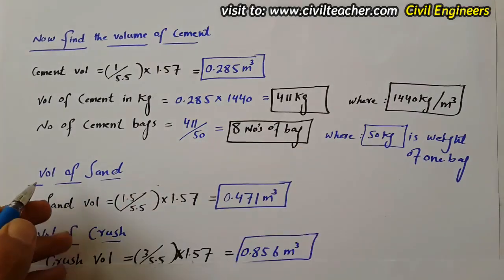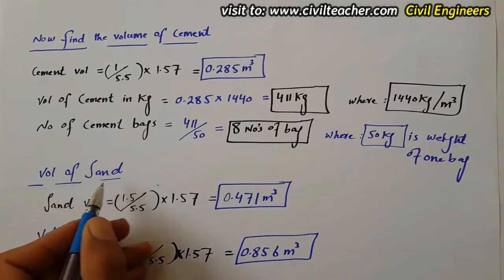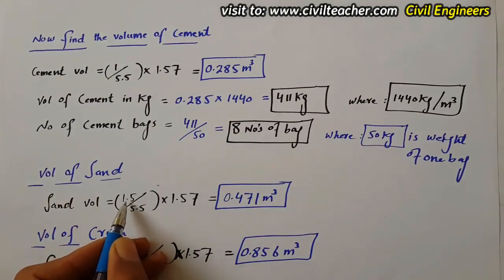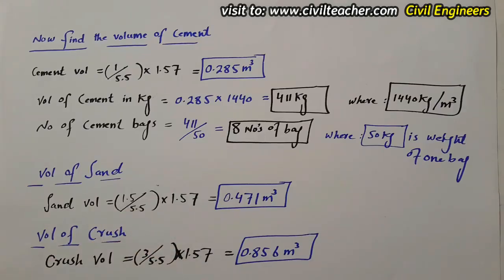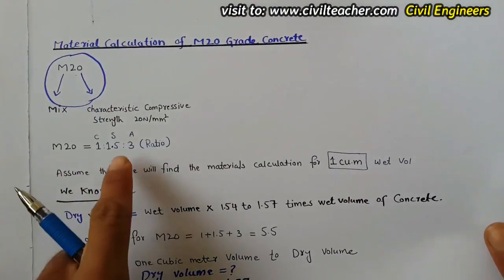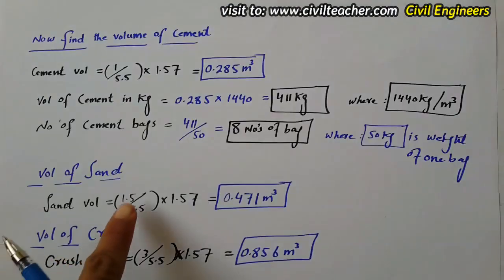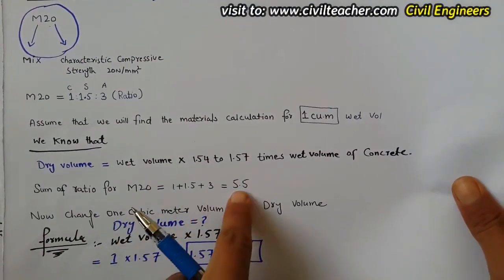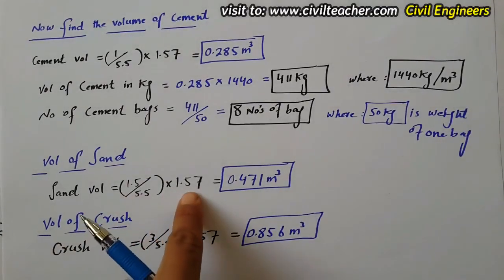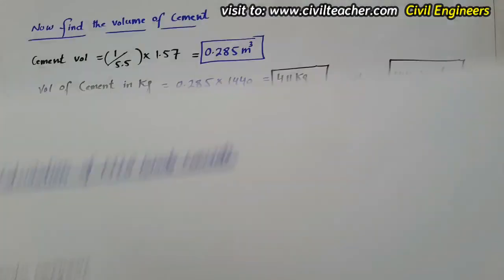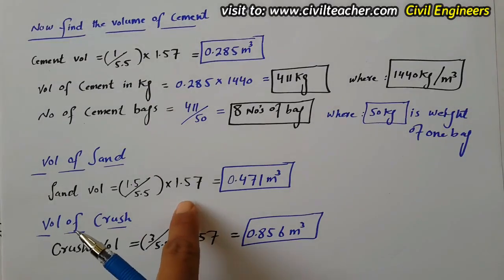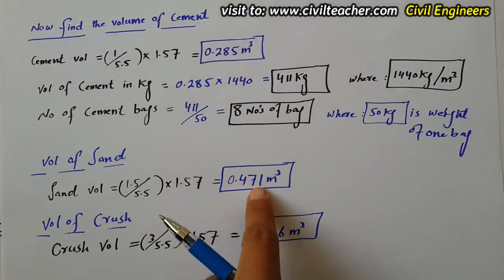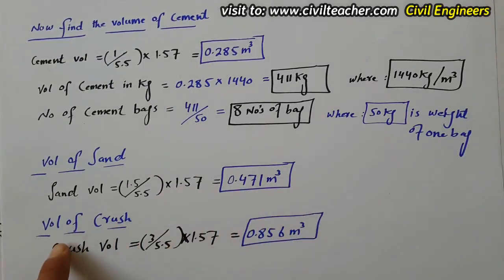Now find the volume of sand. Sand ratio is 1.5, so sand volume equals 1.5 divided by 5.5 (sum of ratio) multiplied by 1.57 (dry volume). This gives 0.471 cubic meters of sand required.